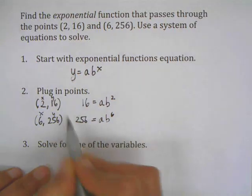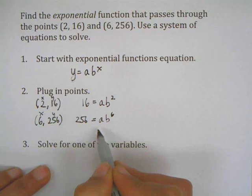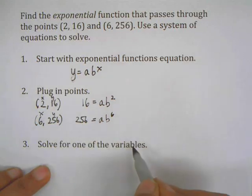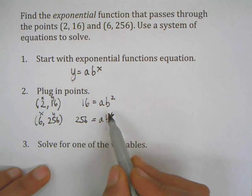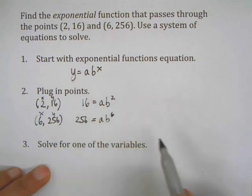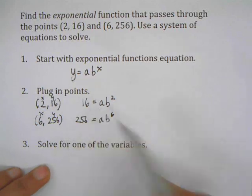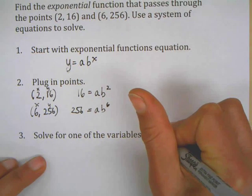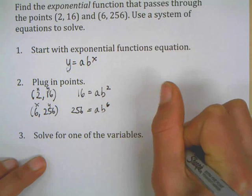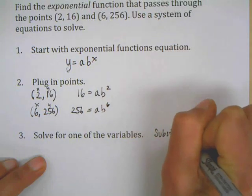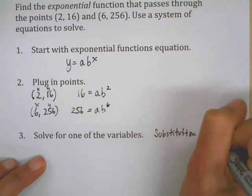Now, unlike before where you could subtract one out from the other and eliminate stuff, you can't do the elimination method here. You could do equal values where you set both things equal to a and then set them equal to each other, or you could solve for one of the variables—probably a is going to be easiest—and substitute it in. I'm going to use the substitution method, but the equal values method is also a great way to go.